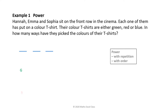For Hannah, she can choose green, red or blue — three choices. For Emma, she can also choose green, red or blue — again three choices. Three choices match each of Hannah's choices, so three times three, giving nine arrangements. For Sophia, she can also choose green, red or blue — another three choices. These three choices match each of the nine choices before, so three times three times three — three cubed — equals 27.